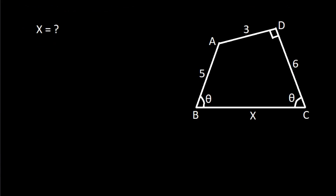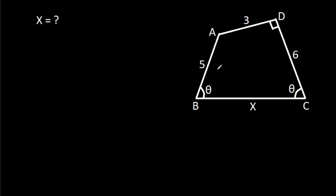In this video, we have been given AB is 5, AD is 3, CD is 6, and BC is X. Angle ABC is theta, angle BCD is theta, and angle CDA is 90 degrees. We have to find X.